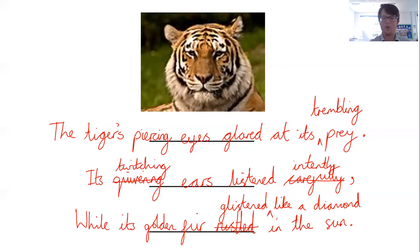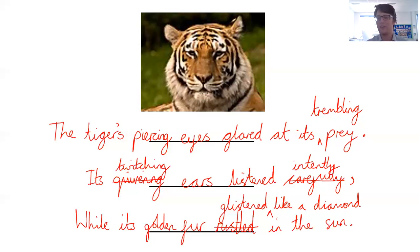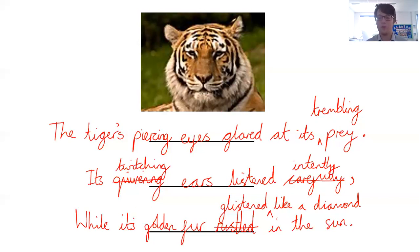Notice how much I've been editing my work as I've gone through — I've read it back out to myself and noticed I didn't quite like the sound of 'carefully,' so I've replaced it with 'intently.' Its twitching ears listened intently while its golden fur glistened like a diamond in the sun. I wanted to convey that the tiger is a threat — piercing eyes, staring at its prey, listening intently — but also a wonderful, majestic creature that's very beautiful and powerful, which comes across in the golden fur glistening in the sun.